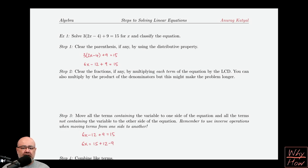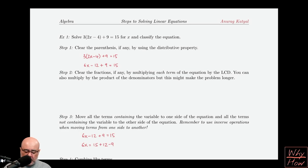Let's look at a couple of linear equations that we can solve from scratch. The first example we have here is we need to solve 3 times the quantity 2x minus 4 plus 9 equals 15. We're solving this equation for x, and then eventually we want to classify the type of equation as well.